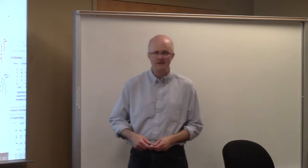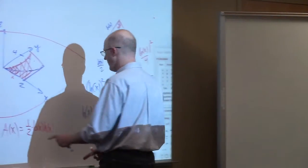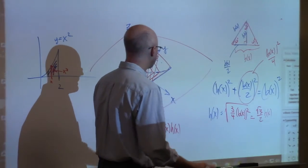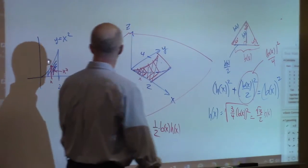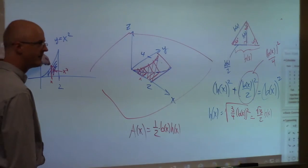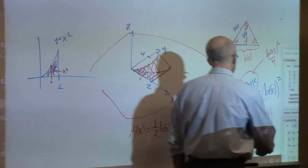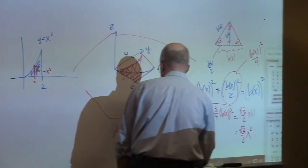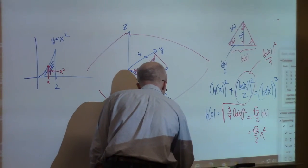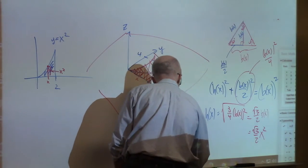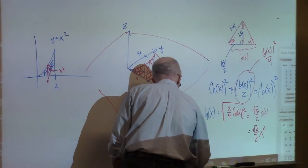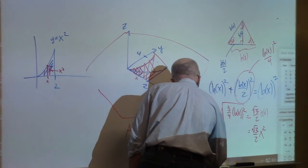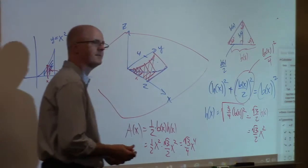Now, plug those things in to get the formula for A of x now. 1 half times b of x times h of x. Now plug in what b of x is. It's x squared. This is square root of 3 over 2 times x squared here. b of x itself is x squared. This problem, for some other problem it would be different. We get square root of 3 over 4 x to the 4th. That's the function you have to integrate to find the volume.